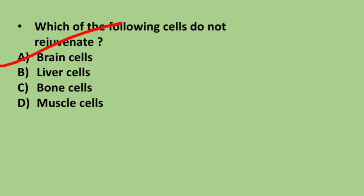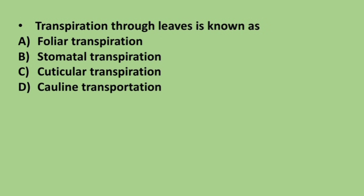Next question: transpiration through leaves is known as — options are foliar transpiration, stomatal transpiration, cuticular transpiration, and coline transpiration. The correct answer is option A, foliar transpiration.